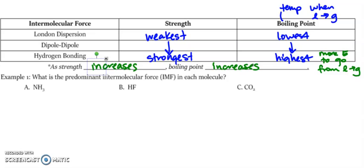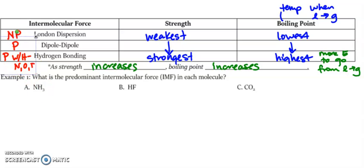Let's go through some examples. What is the predominant intermolecular force in each molecule? Predominant means which is the strongest. If something has hydrogen bonding, it also has dipole-dipole and London dispersion. If something has dipole-dipole, it also has London dispersion. They always have the weaker ones too. The way to figure this out: London dispersion is for any nonpolar molecule; dipole-dipole is for any polar molecule; and hydrogen bonding is for any polar molecule with H bonded to N, O, or F.